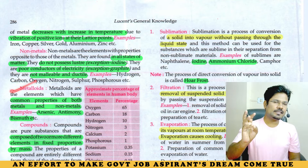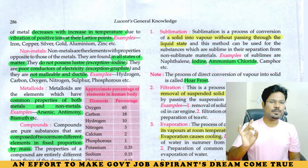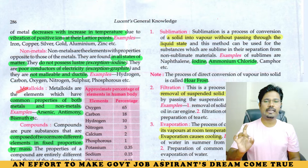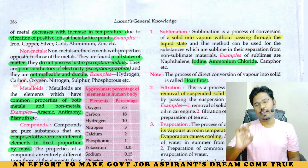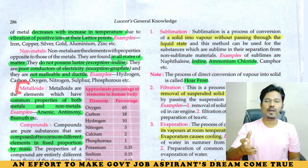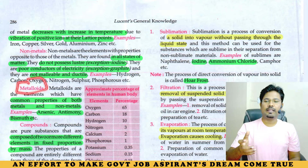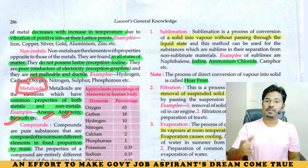Metalloids. Metal properties and non-metal properties — two of them combined are metalloids. For example, arsenic, antimony, and bismuth.